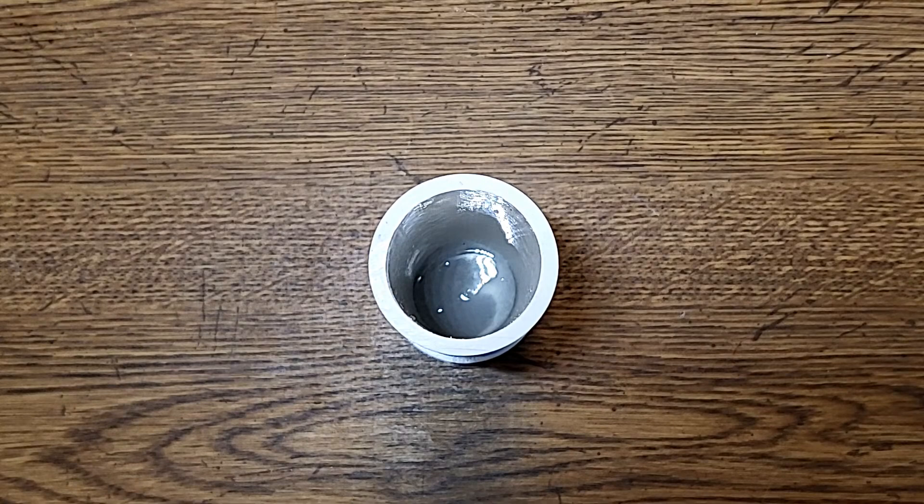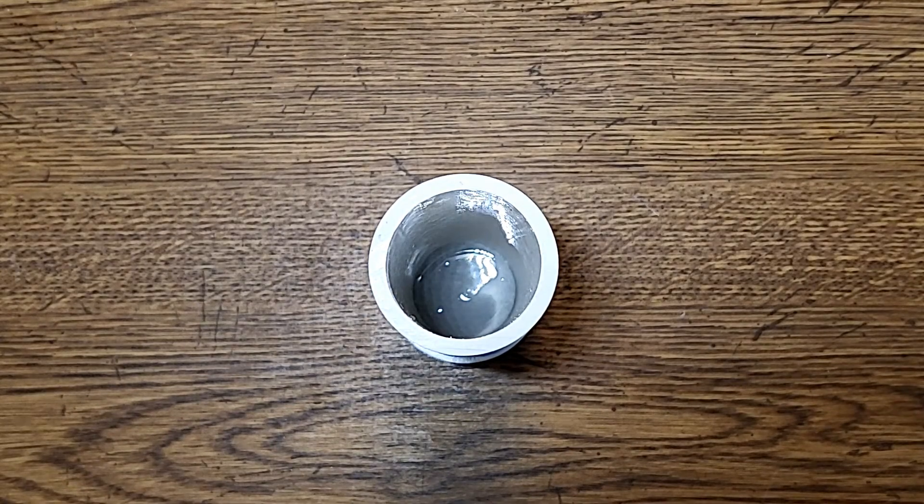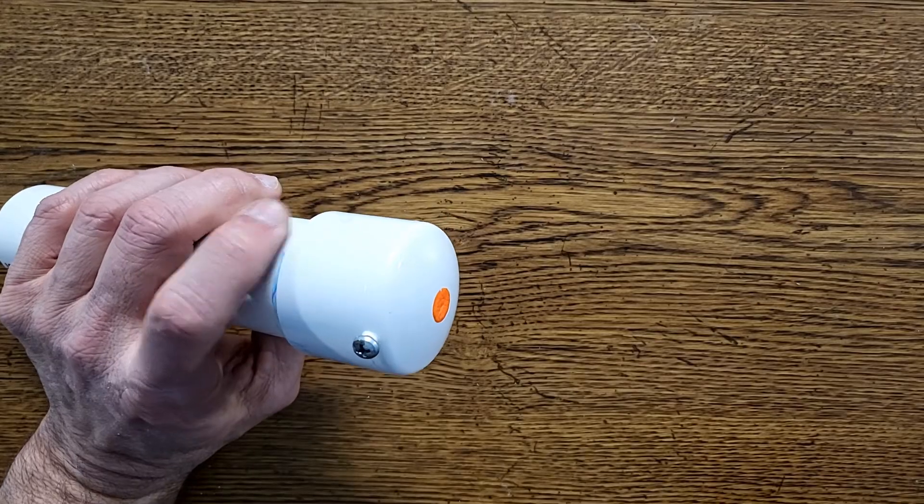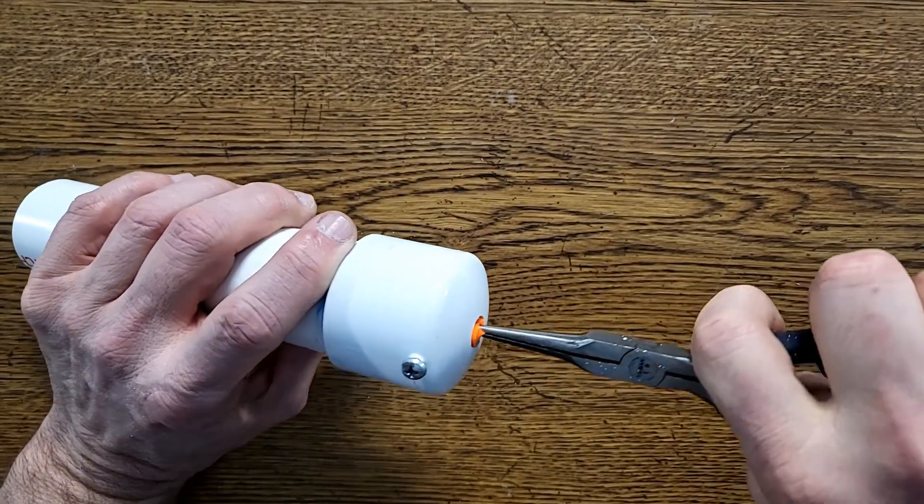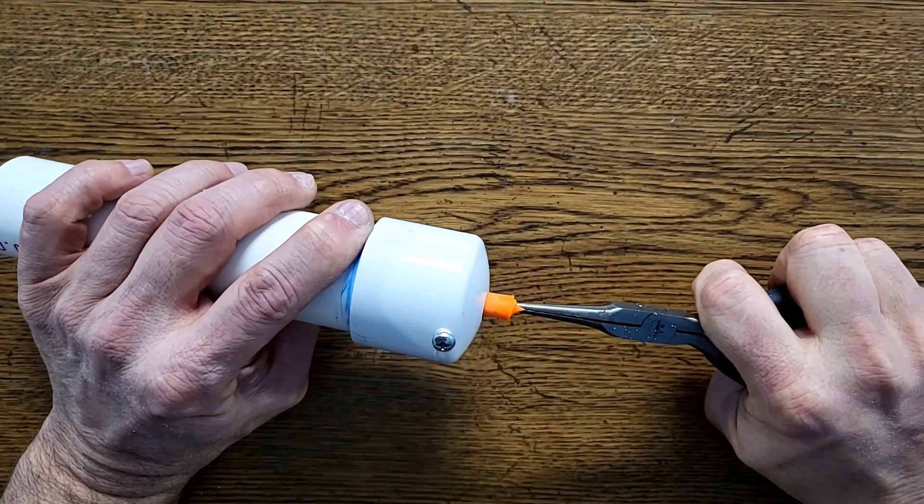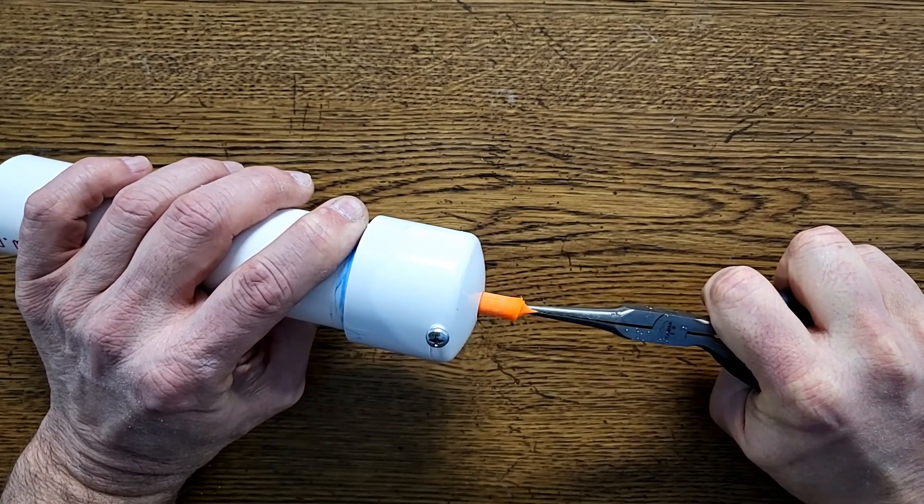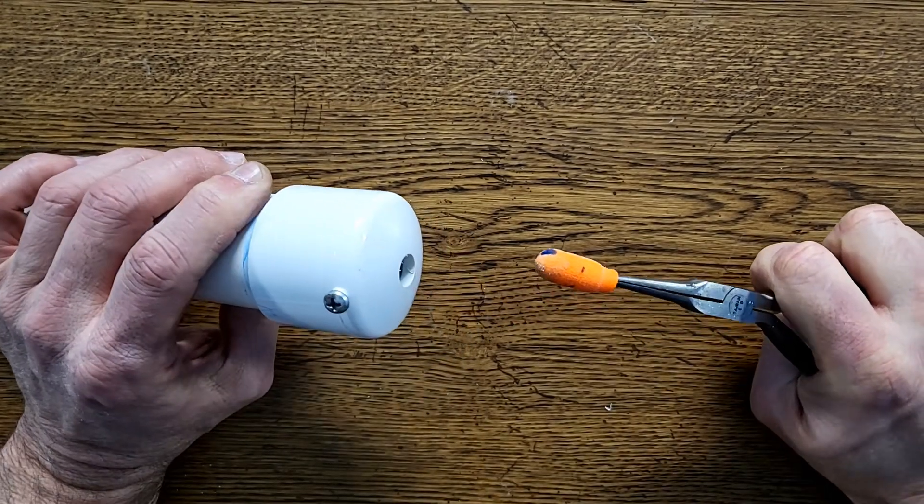This usually takes around 30 minutes, but check the instructions for your brand of anchoring cement. Once the anchoring cement is hard, use the needle nose pliers to pull out the ear plug. Pull slowly and it should pop out. Keep the ear plug, we'll need it later.